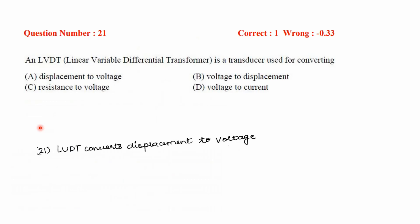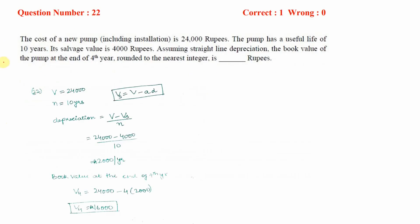An LVDT, which is a linear variable differential transformer, is a transducer used for converting displacement into voltage. Therefore the correct option is A.